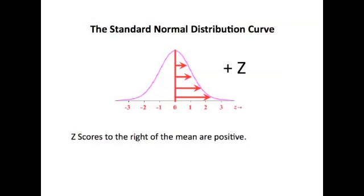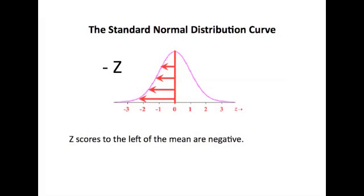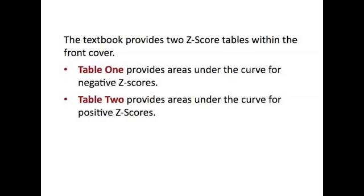Those z-scores or values above the mean are positive, and those z-scores with values below the mean are negative. The z-score tables that we will look at are contained within the textbook, which is assigned for this course. Those tables have a table one, which gives the negative z-score values, and a table two, which provides values for the positive z-scores.